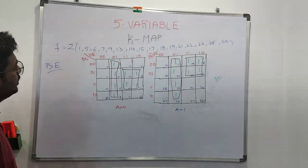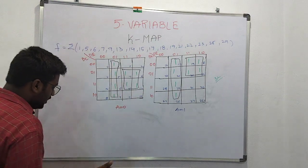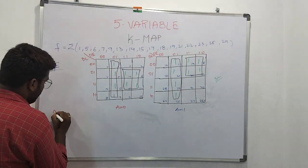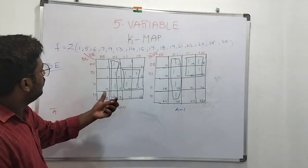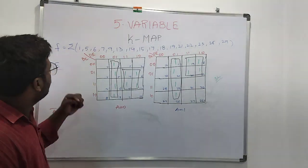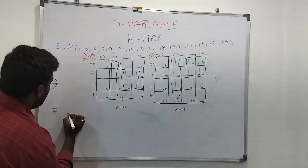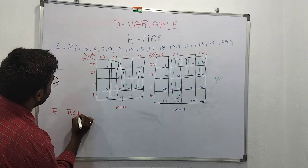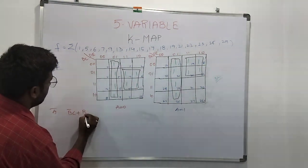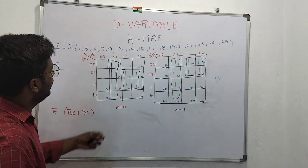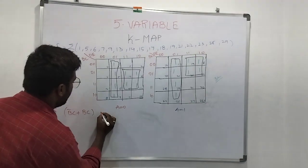Next, I am going to solve: D-bar with A equals 0 gives A-bar. Then for the grouping, B-bar C plus B C gives us the expression, which I am going to place as D.